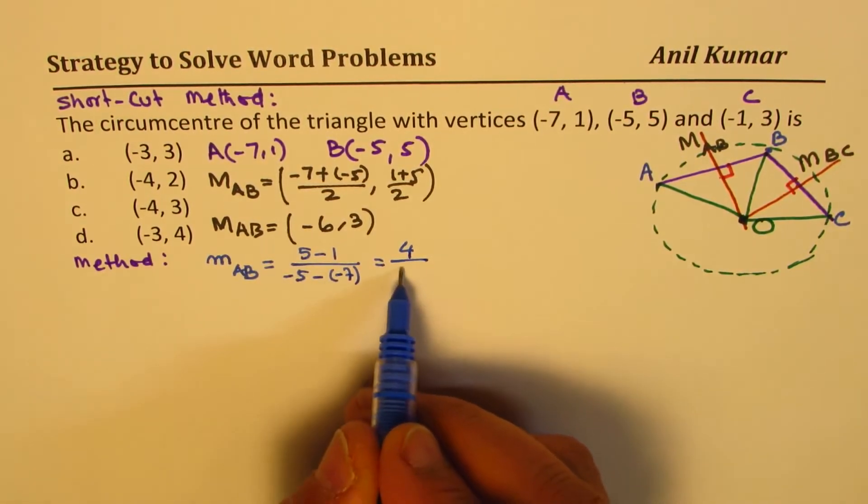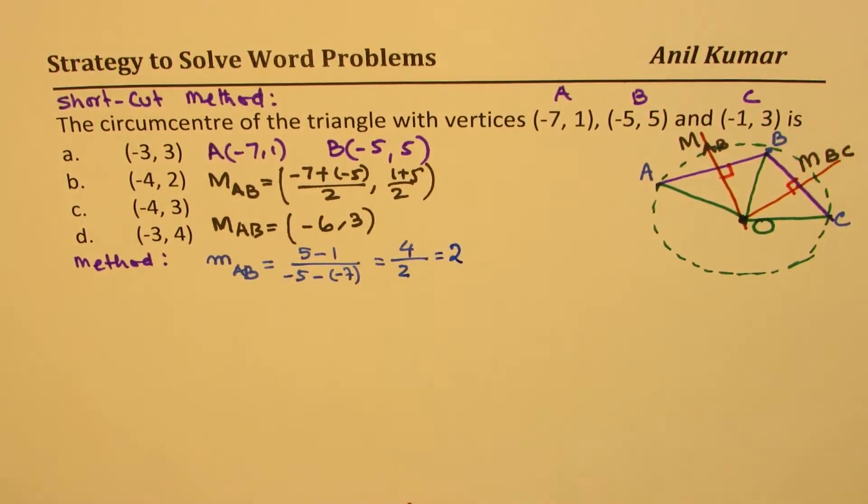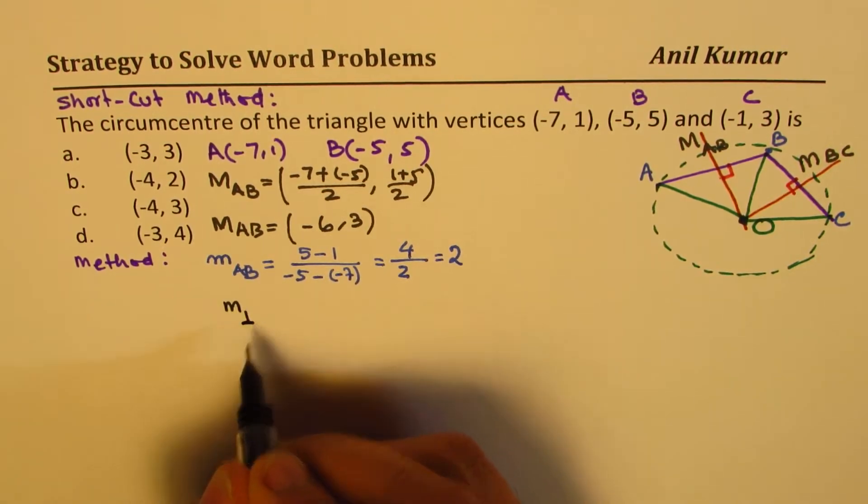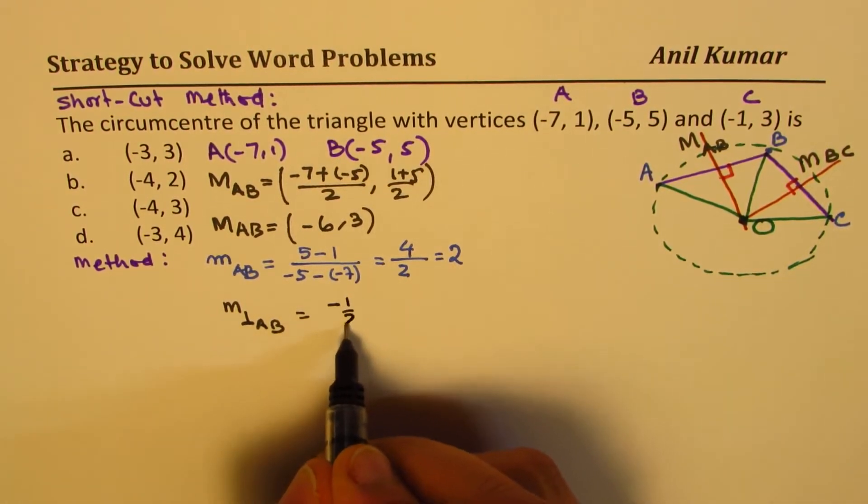So that is 4 over, this becomes plus 2. So the slope here is 2. So we get the slope. Now, what is the perpendicular slope? We are interested in right bisector. So perpendicular to AB will be negative reciprocal, negative half.